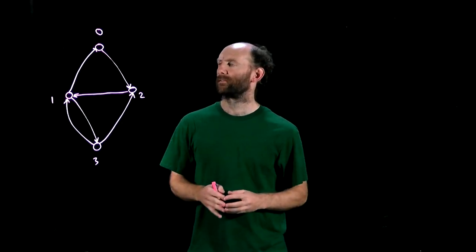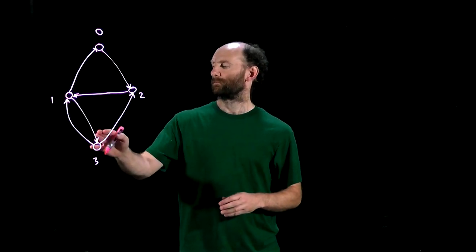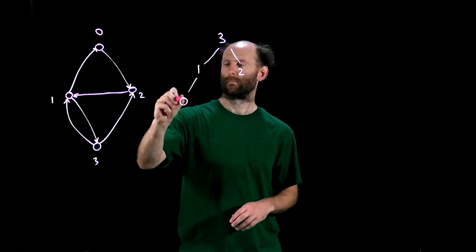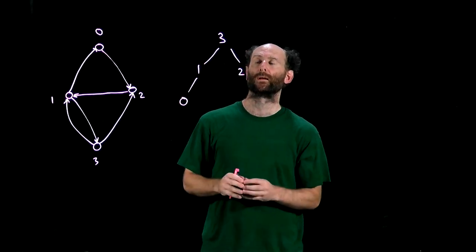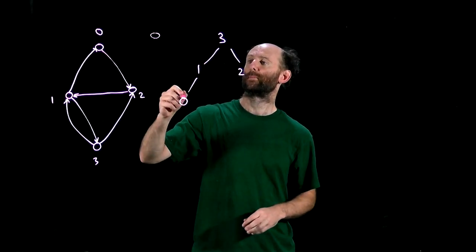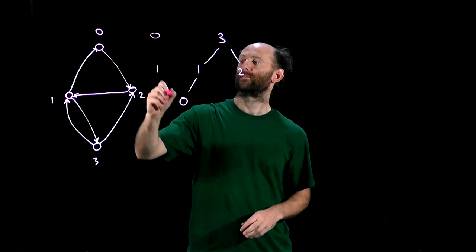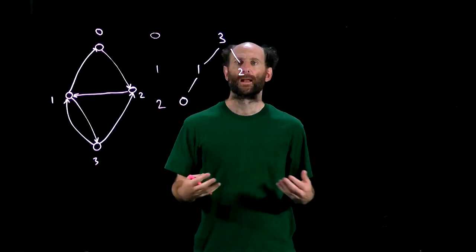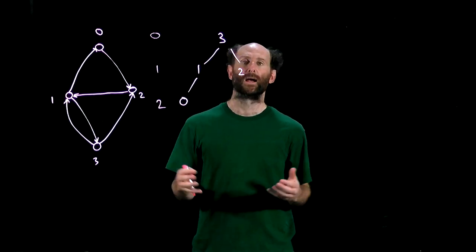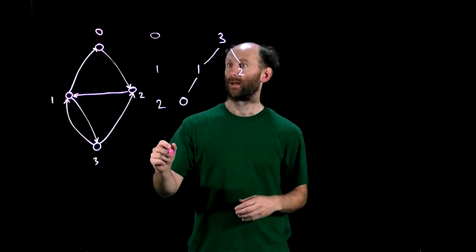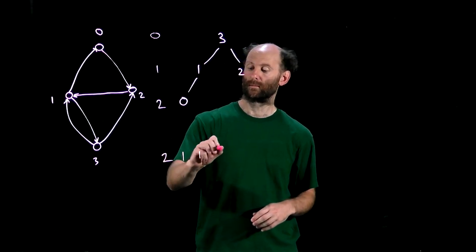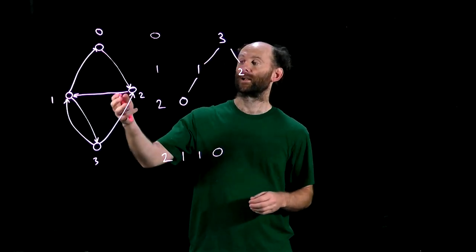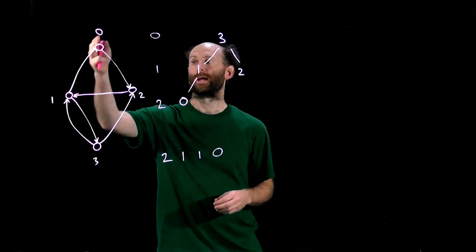For example let's look at this digraph we'll run a BFS visit from u equals 3 and this is the search tree we get. So 3 is at distance 0 from itself, 1 and 2 are at distance 1 and 0 is at distance 2. That is we get the row corresponding to 3 and our distance matrix is 2, 1, 1, 0. So if we want to get the entire matrix we'll just run BFS visit from each node in turn.